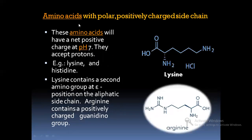In the last class, amino acids with polar positively charged side chain have a net positive charge at pH 7; they accept protons. Examples are lysine, arginine, and histidine. Lysine contains a second amino group at the third position on the aliphatic side chain. Arginine contains a positively charged guanidino group — the NH and NH2 groups referred to as the guanidino group — which acts as a positively charged side chain that can accept protons.